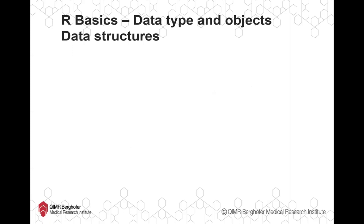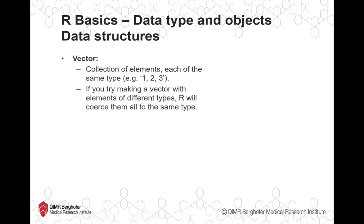Now we'll look at data structures for storing different value types. A vector is a collection of elements each of the same type. For example, the vector 'my_vector' contains three numbers: 10, 15, and 7 — all numerical, all the same type. If you try making a vector of elements of different types, R will coerce them all to be the same. So if you try to make a vector of a couple of numbers and some text, R will try to convert them all to text, because a vector can only contain the same data type.